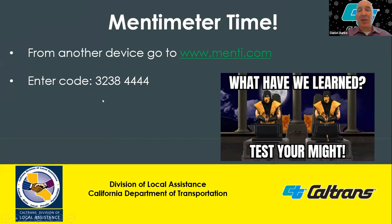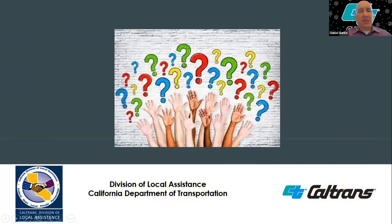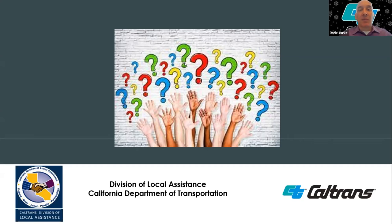Thank you all for participating in Mentimeter. Let's look at some questions from the chat. Jose asks: how do we set a DBE goal for on-call contracts when you don't know how much work you're actually going to give out? Jessica responded that as a best practice, her agency doesn't set DBE goals on on-call contracts — they have them as race neutral. Title 49, Part 26 of the Code of Federal Regulations requires DBE goals to be set on federal aid contracts.